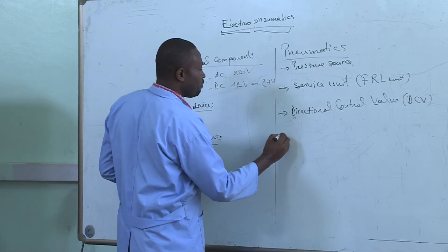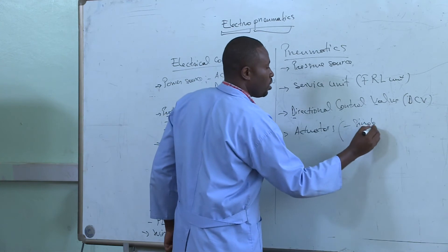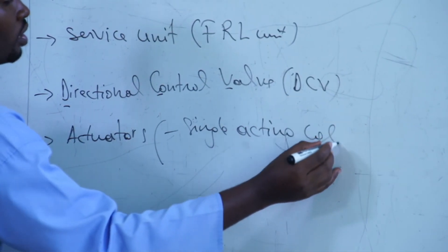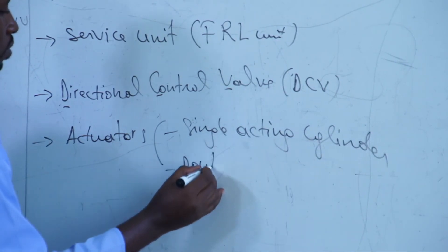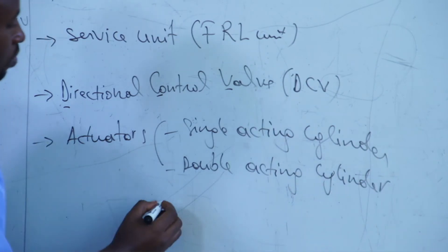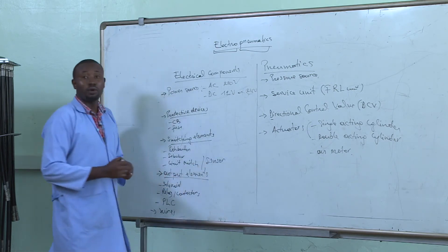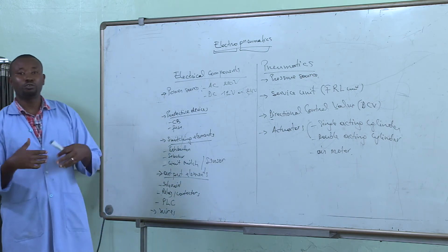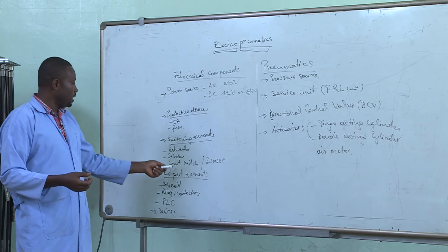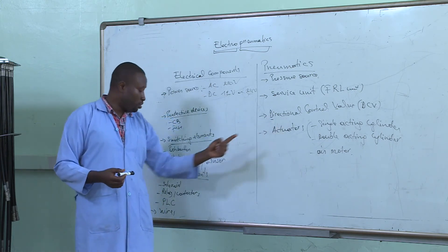We will also need actuators, which can be single-acting cylinders, double-acting cylinders, or even an air motor. Coming back to the electrical system, when you hear 'limit switch' you can also understand 'sensors.' The limit switch or sensors bring feedback information to the control system — that is, the electrical system. They may sense the location of the actuator so that the feedback information comes back to the directional control valve through the solenoid.